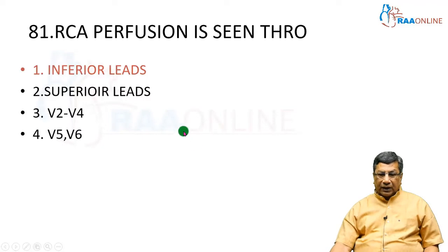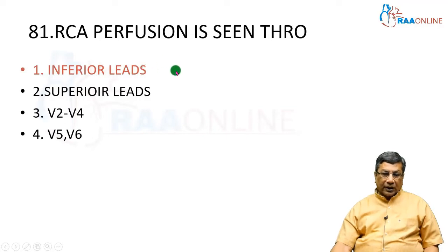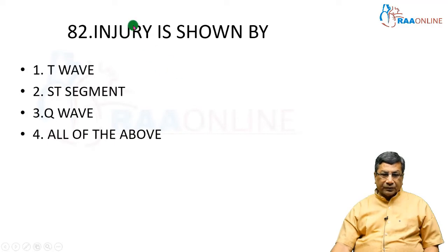So whenever L2, L3, aVF show ST elevation, the right coronary artery is totally obstructed — obstructed due to red thrombus, an acute total occlusion by red thrombus.